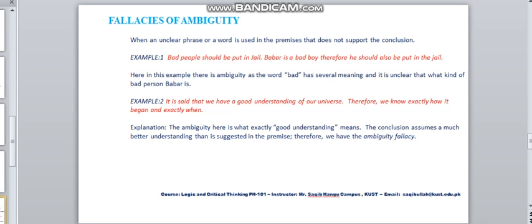Example 2: It is said that we have a good understanding of our universe, therefore, we know exactly how it began and exactly when. Here, the good understanding is basically a better understanding, because a good understanding never conveys the meaning what the conclusion conveys.